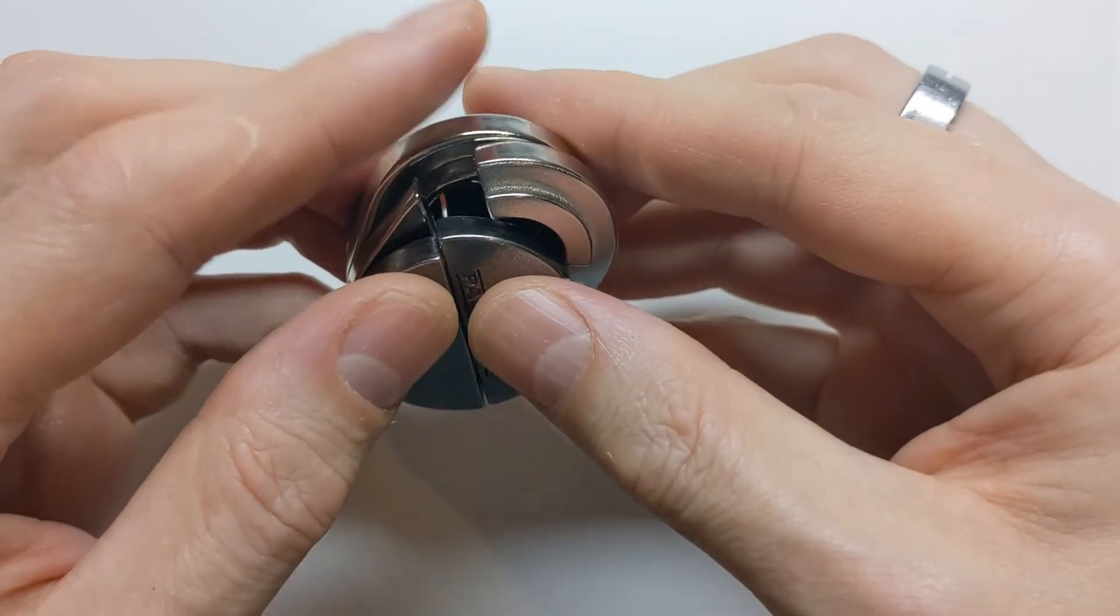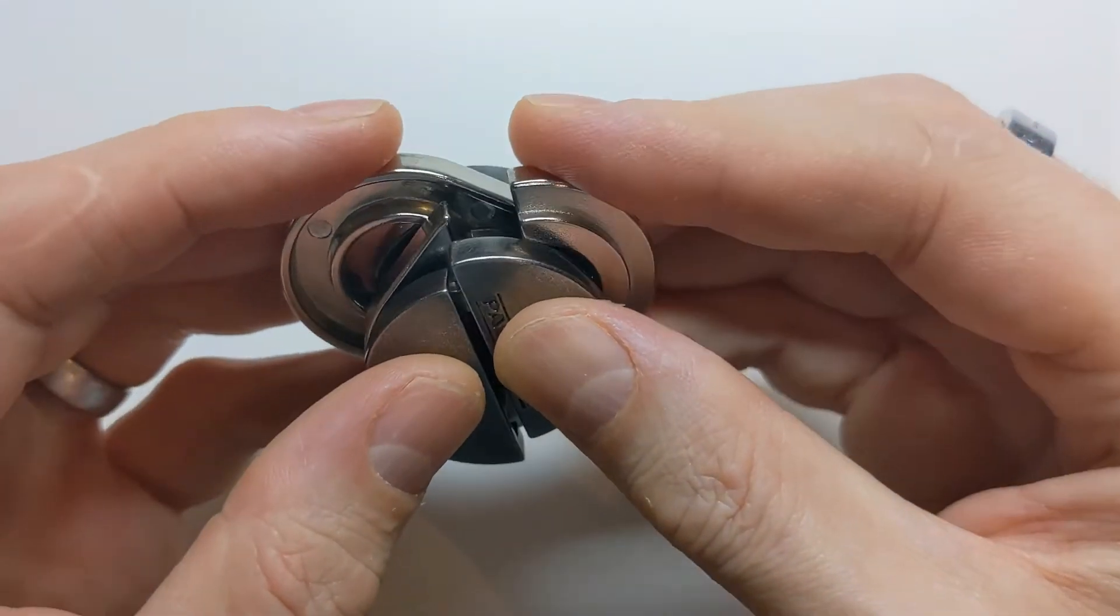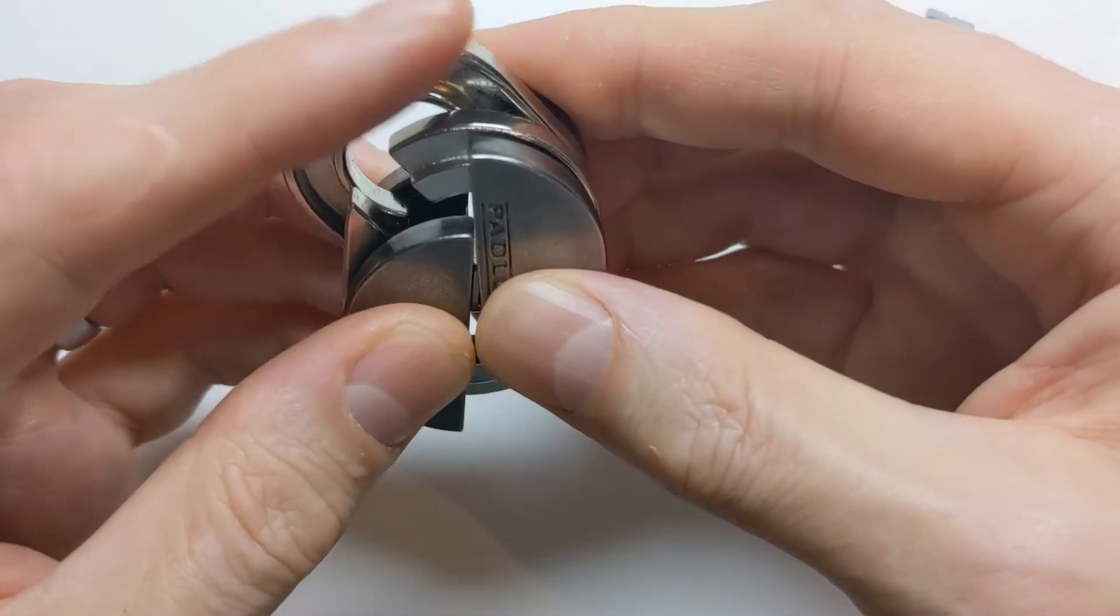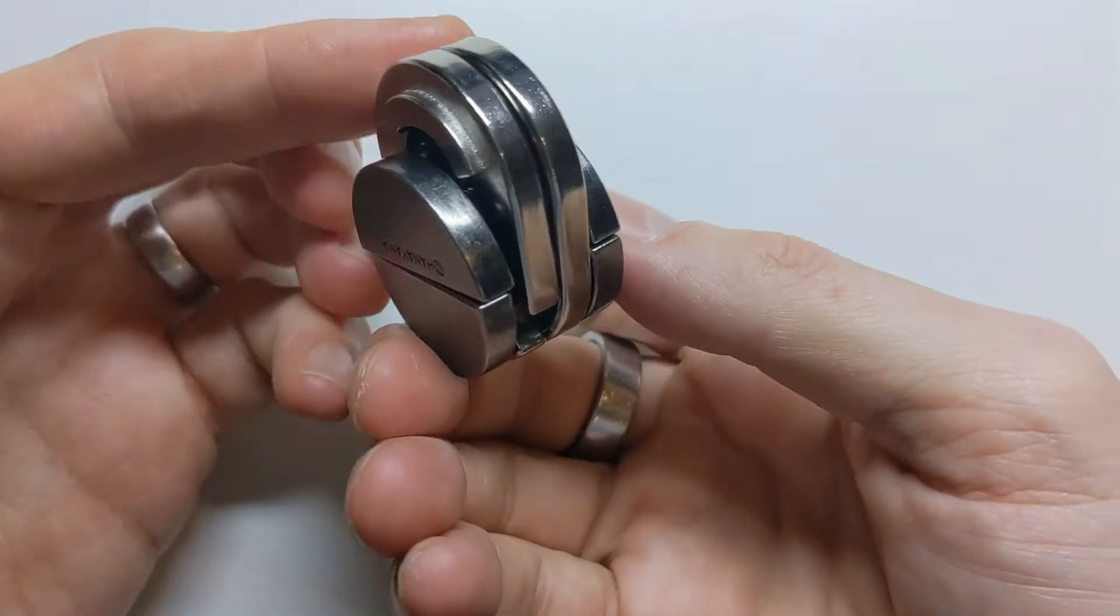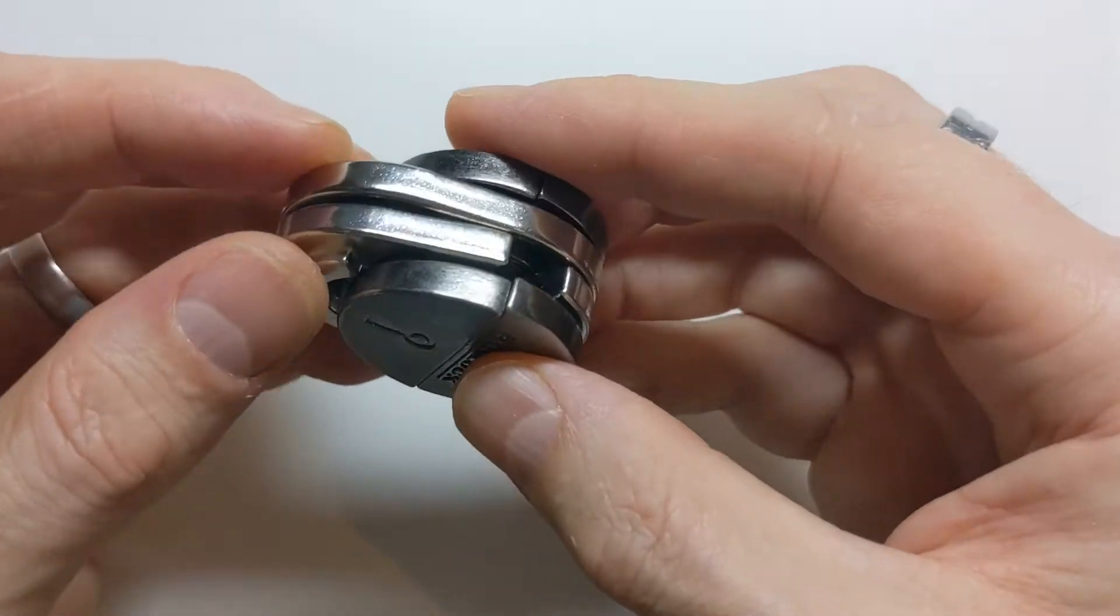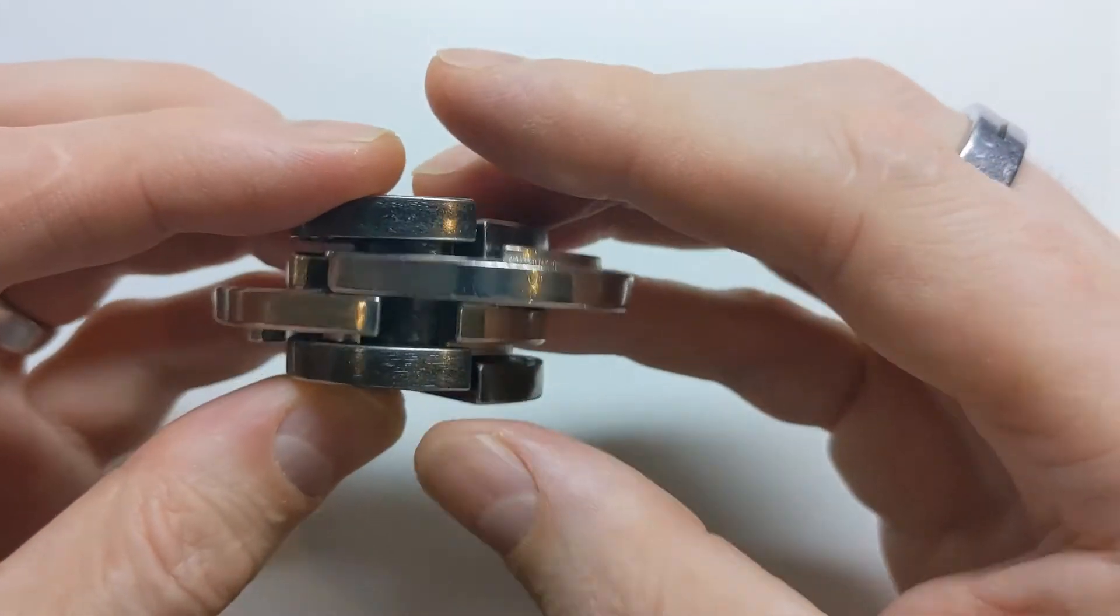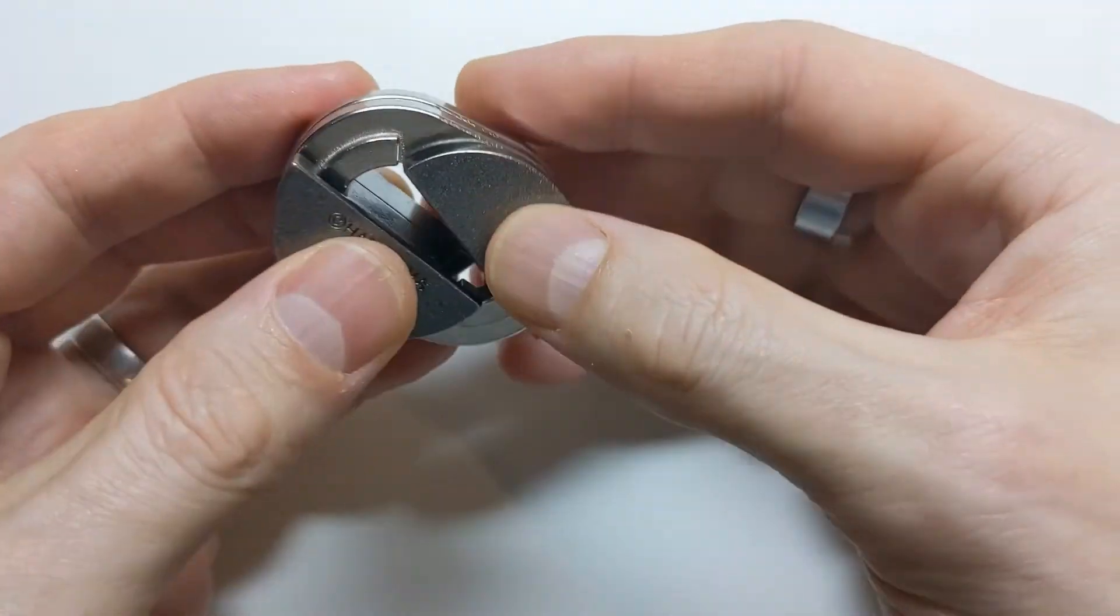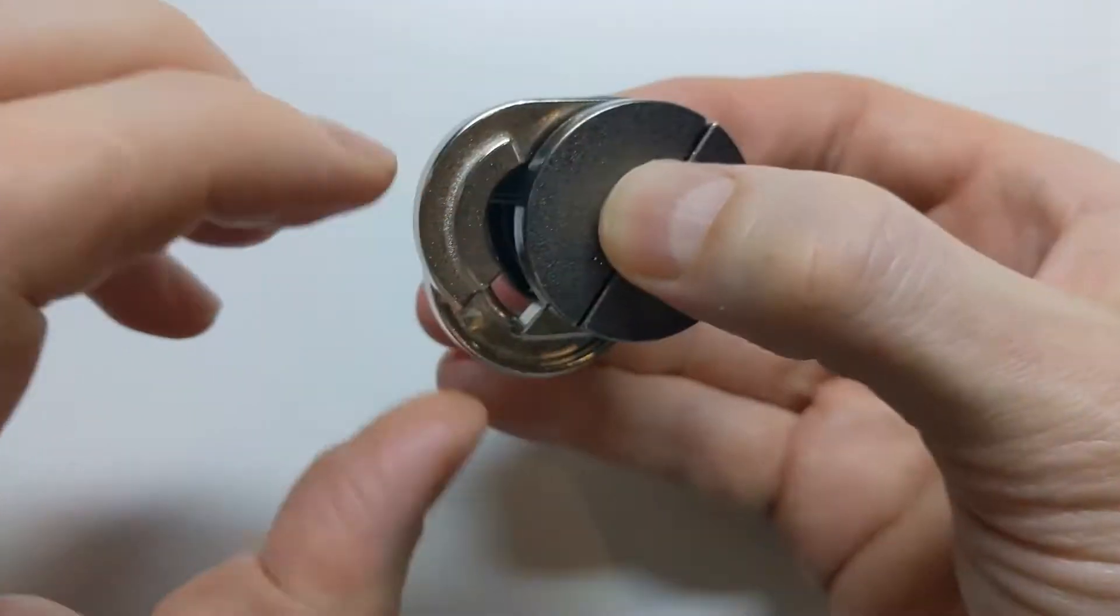So now I need to get it back to the second state where both shackles are closed. And again, this is the one that I find the hardest. But I think, yeah, I think this is right. No, not quite. There we go. So both shackles are now closed. And now we just have to do the final step to get back to the first state where both shackles are open. What is this one? Yay. There we go. So that's it.